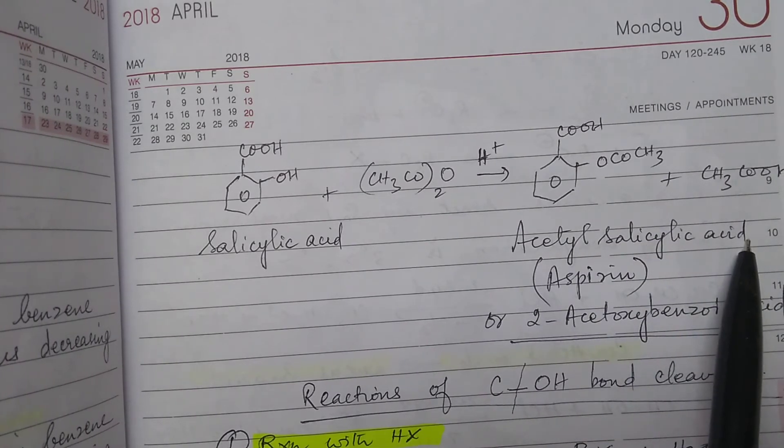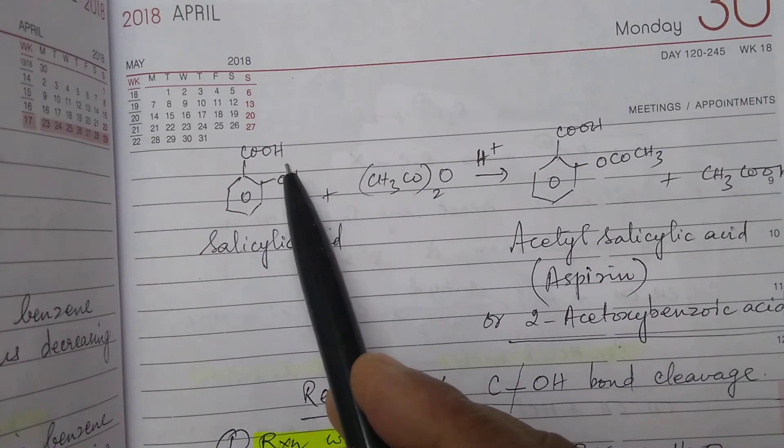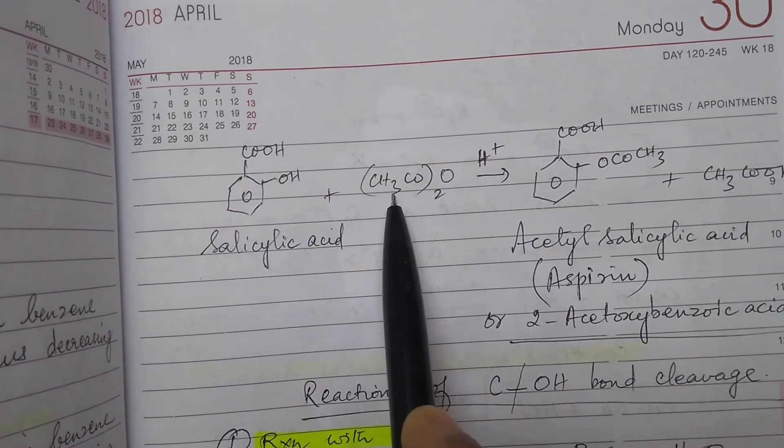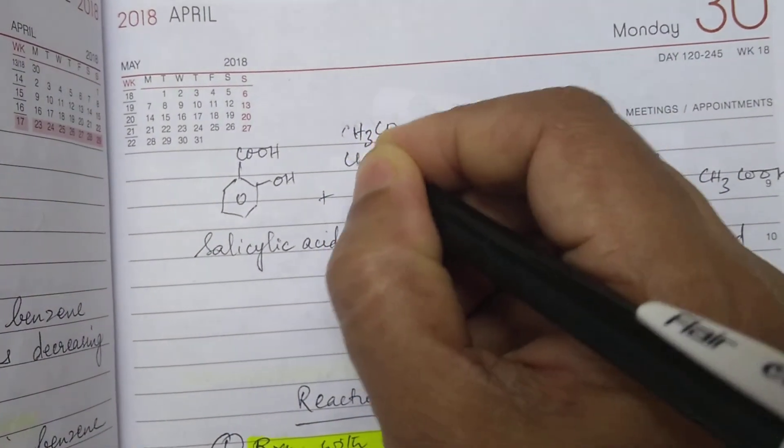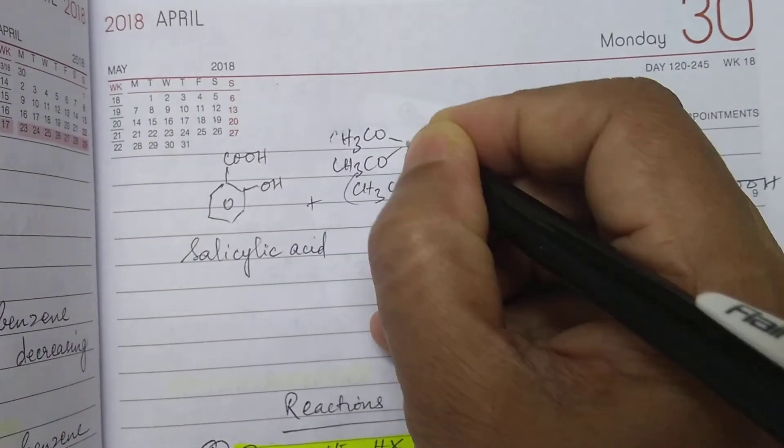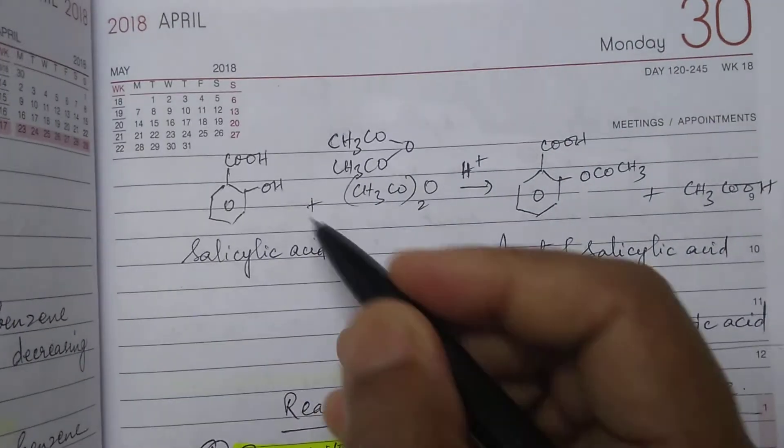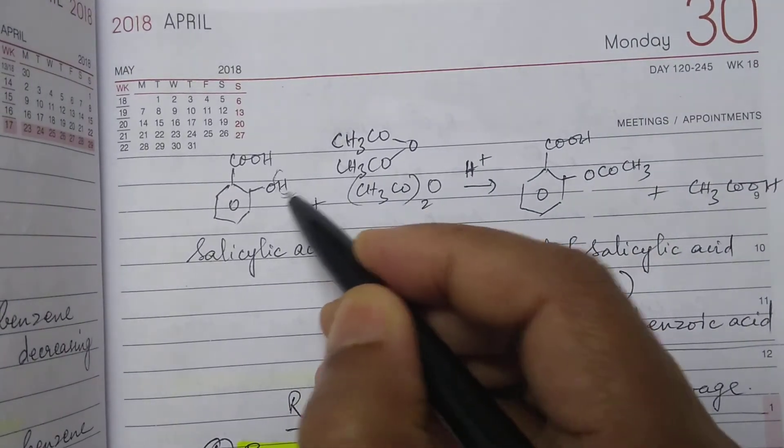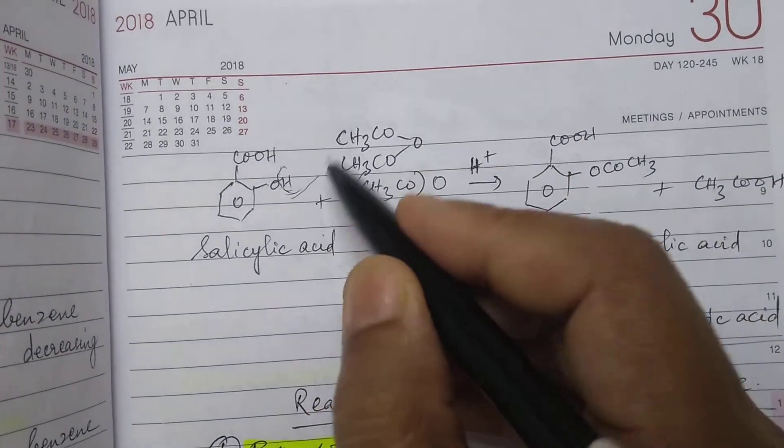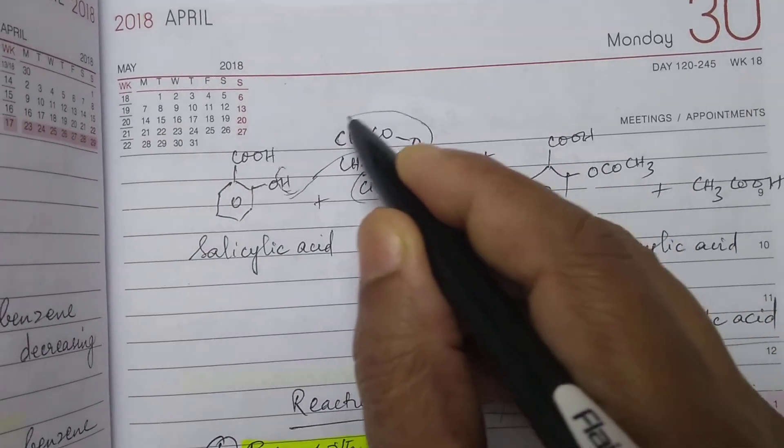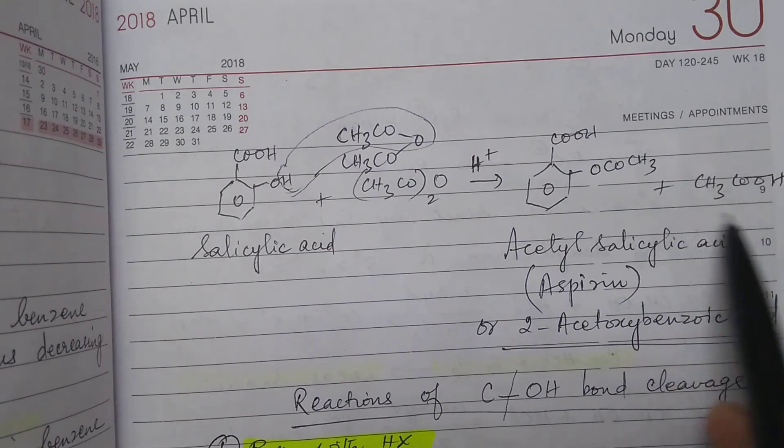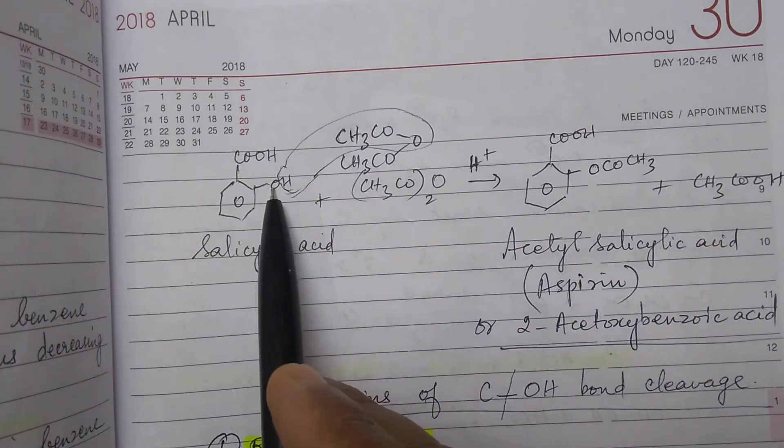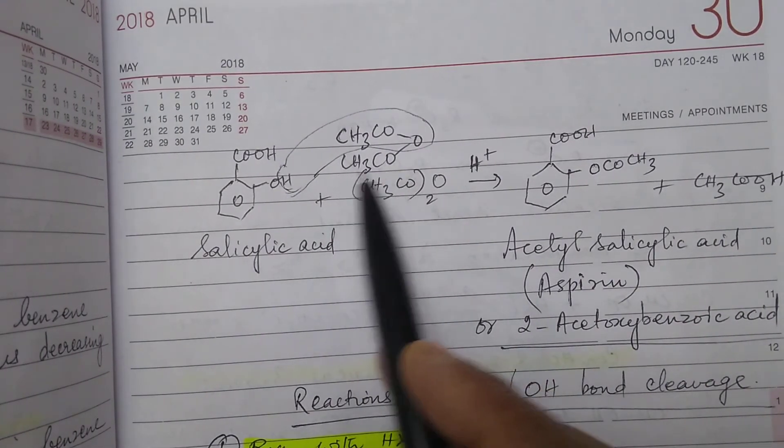Now what is happening here? The hydrogen of this OH group will go with this CH3CO2O anhydride. So this hydrogen will go with CH3CO2O group like this. That is why the byproduct is CH3CO2H and with that it will go with COCH3.